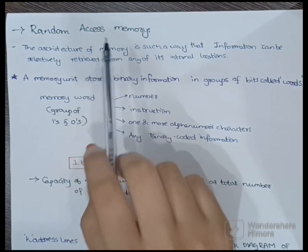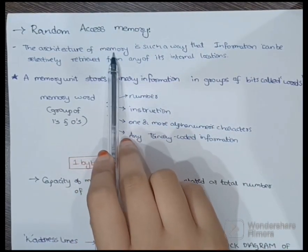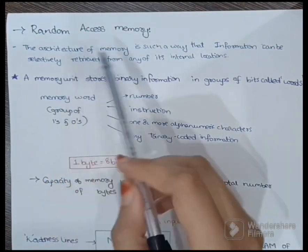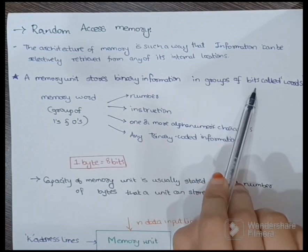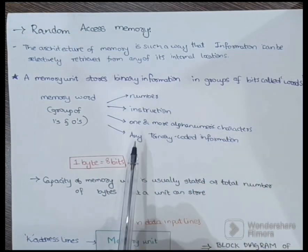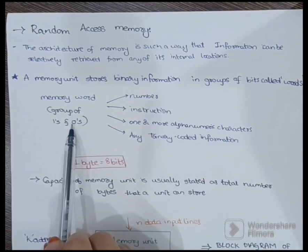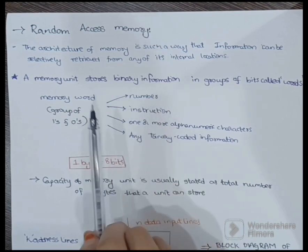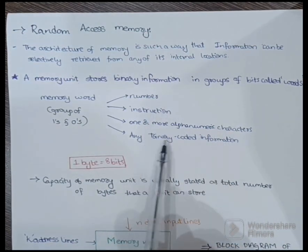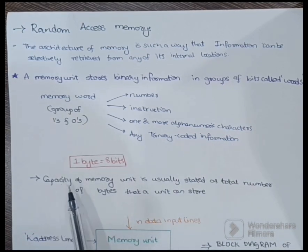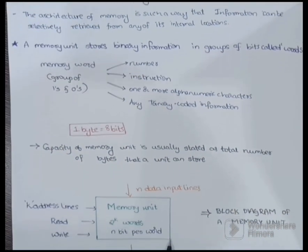Random Access Memory is associated with circuits needed to transfer information in or out of the memory device. Its architecture is designed so that information can be retrieved from any of its internal locations. A memory unit stores binary information in groups of bits called words. A collection of 8 bits is called one byte. A memory word can be a number, an instruction, alphanumeric characters, or any binary coded information. The capacity of a memory unit is stated as the total number of bytes it can store.